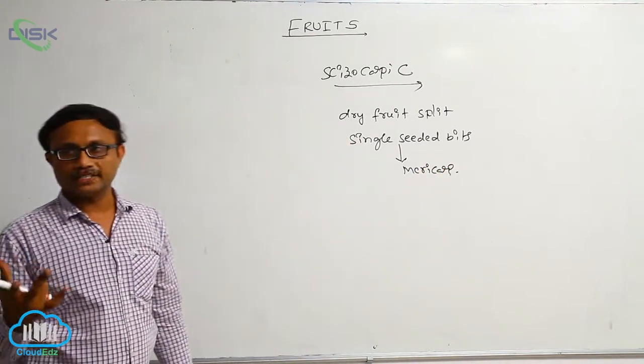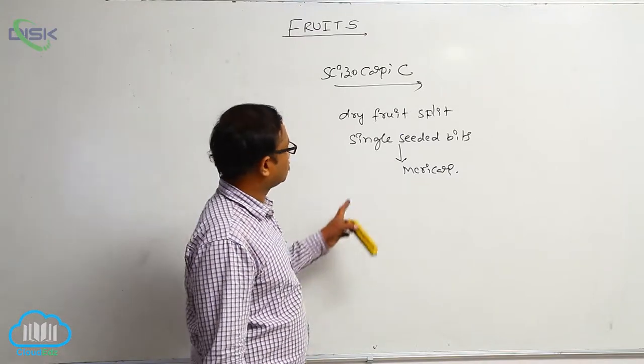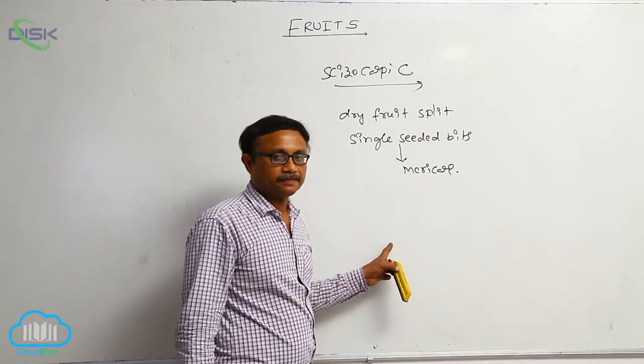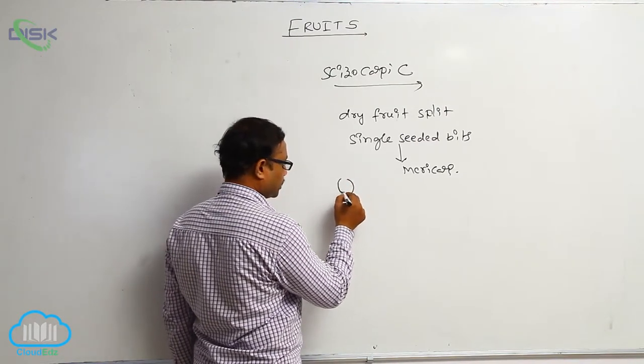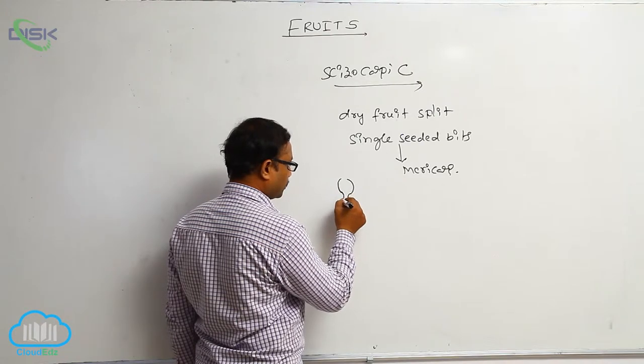First one is fruit is dehiscent at the time of maturity. Split - that is a dehiscent character. After then, it is divided into single seeded bits. This single seeded bits is known as the mericarp.